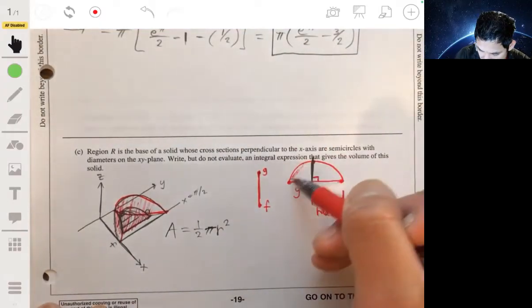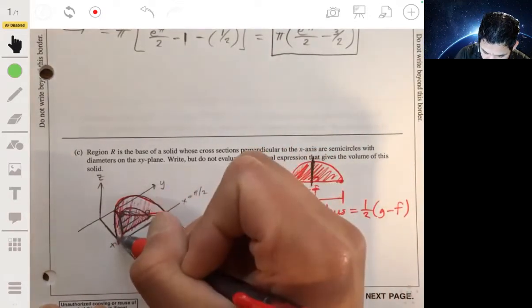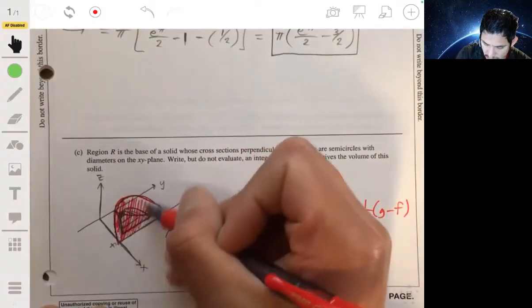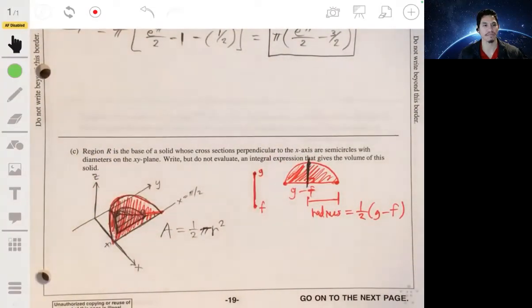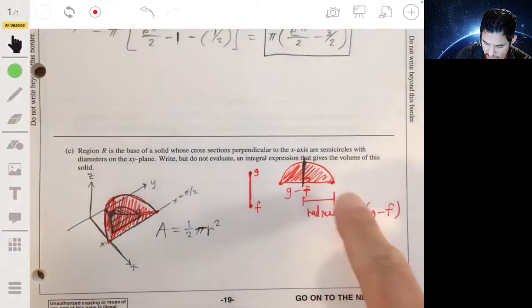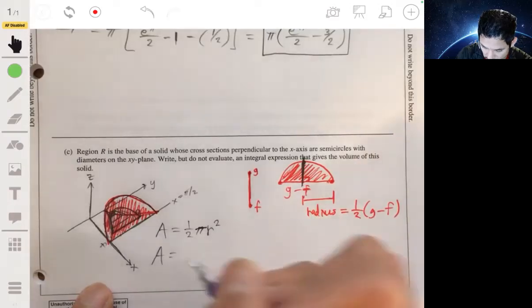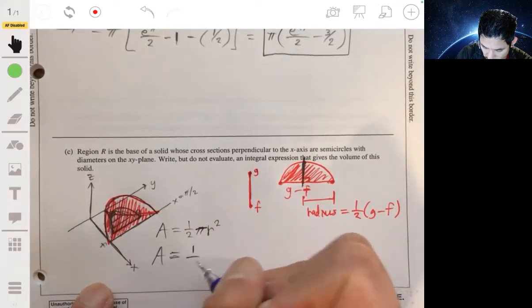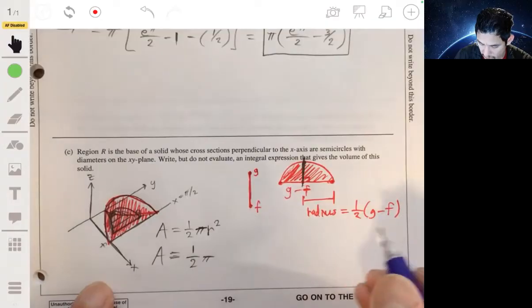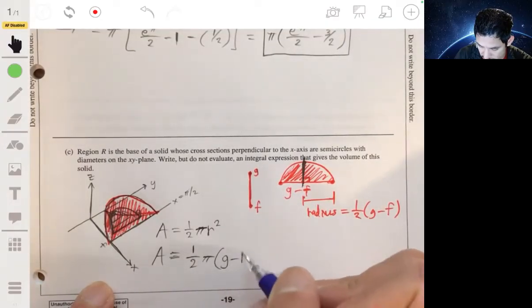And again, let me actually—so this, if I'm referring to this, this would be like one of these cross sections. I probably should have made this bigger, probably would have looked a little better. So then the area of these cross sections would be one half π times this radius squared, so one half times G minus F squared.